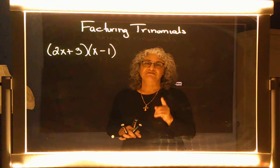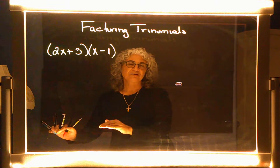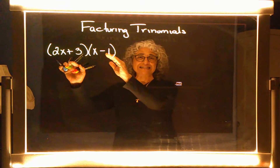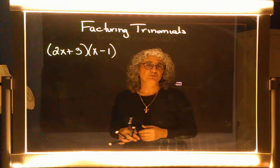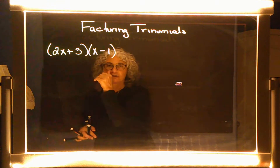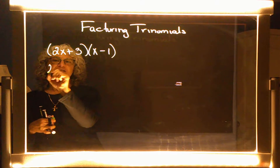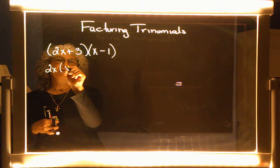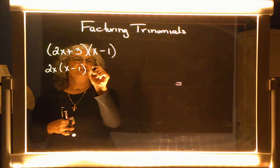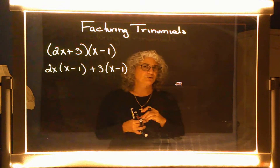Because remember, factoring is us taking the answer of a multiplication problem and going back and finding what binomials did we multiply together. So the first step of this particular distribution process is I'm going to take that 2x and distribute to the x minus 1. But I'm also going to take this plus 3 and multiply it to that same parenthesis of x minus 1.